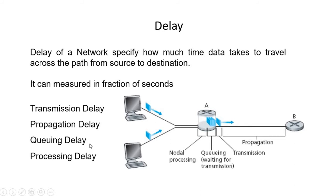Queuing delay occurs whenever the channel is busy and your data packets are inside a queue waiting for the channel to become free. This is like reaching a toll booth where there is traffic — you wait in the queue to pay the toll, wasting some amount of time. Similarly, when the channel is busy, data packets stay inside the queue for a small amount of time. That time is known as queuing delay.